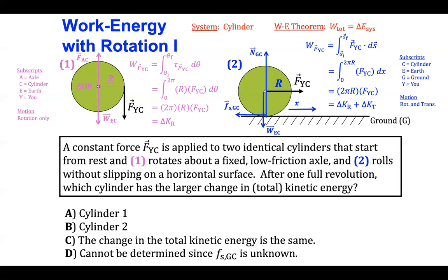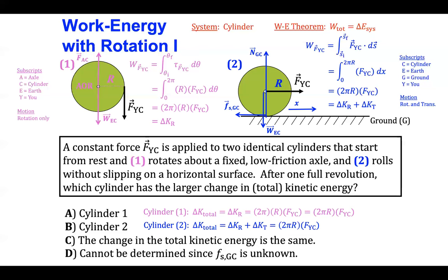Notice that the normal force, the weight force, and the static friction force do not do any work at all on the cylinder. To answer the question of which cylinder has a larger change in total kinetic energy: the first cylinder has a total change in kinetic energy due to changes in its rotational kinetic energy, found to be 2πr times the applied force. The second cylinder has the exact same change in total kinetic energy, but that change is due to both the rotational and translational effects of the cylinder's energy. So the correct answer is C — both cylinders undergo the same change in total kinetic energy.